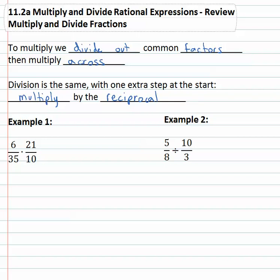So for example if we saw 6 over 35 times 21 over 10, we would first start looking for common factors that we could divide out of the numerator and denominator. And to help us identify that, we'll factor each of these numbers. 6 is 2 times 3 over 35 is 5 times 7 and we're multiplying by 21 is 3 times 7 and 10 is 2 times 5.